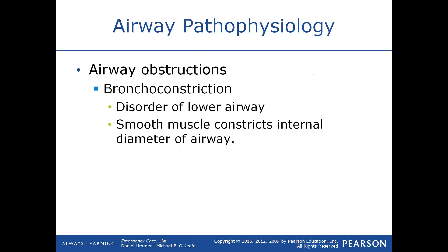Bronchial obstruction can result from a lower airway disorder where the smooth muscle constricts and the internal diameter of the bronchi becomes much smaller. The most common such disorder is asthma, which causes bronchial constriction and, in addition to narrowing the bronchial passages, causes the airways to fill with mucus. We see this in what we call chronic obstructive pulmonary diseases — asthma, emphysema, and chronic bronchitis.